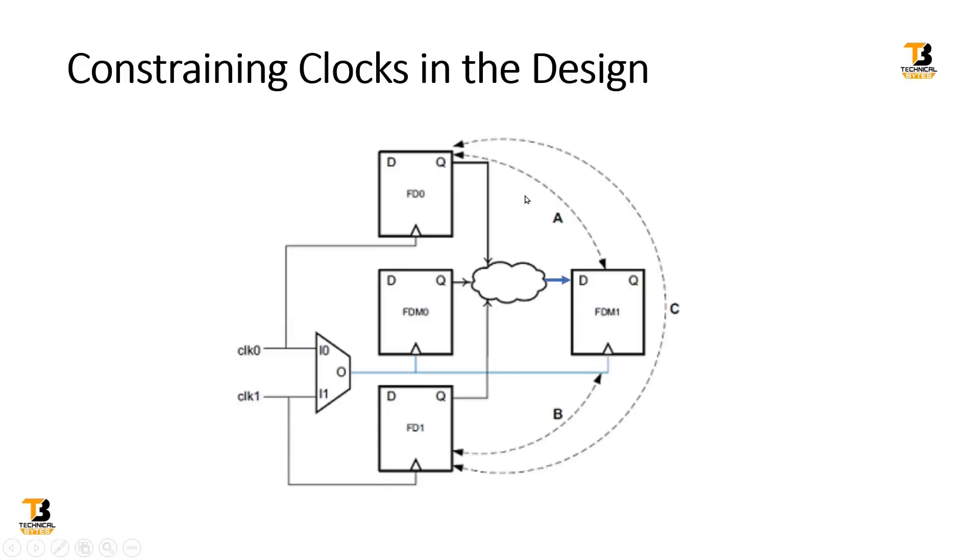In this design, there exists a path A, meaning the flop operating at clock one feeds its output to combinational logic, which then goes to FDM1. In other words, the flop working at clock one provides its data to the flop working at the multiplexer output.